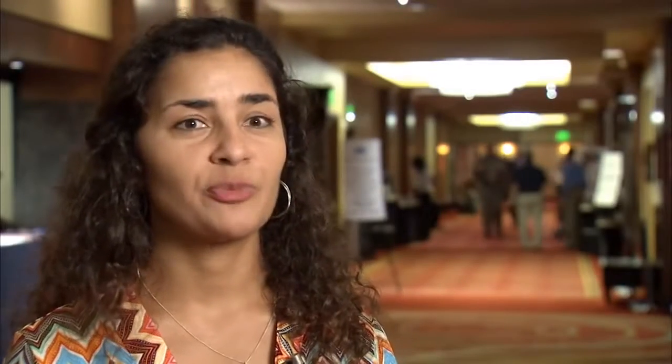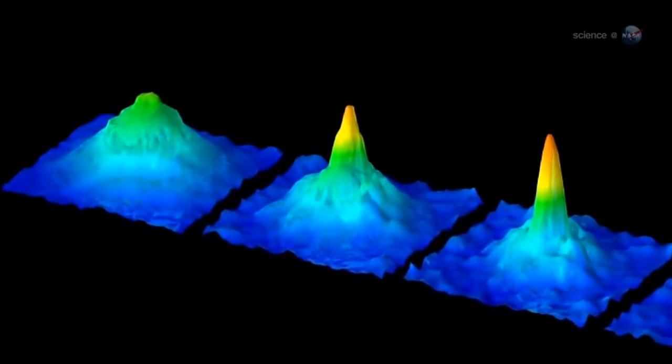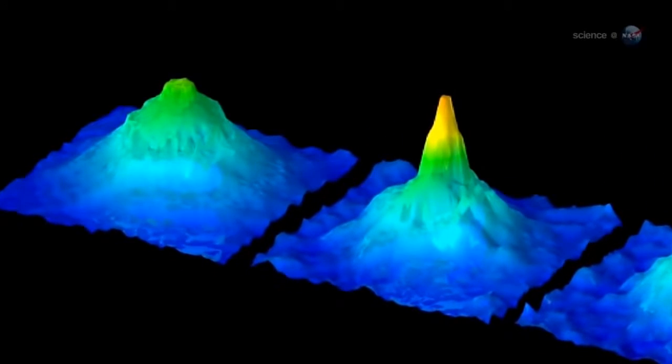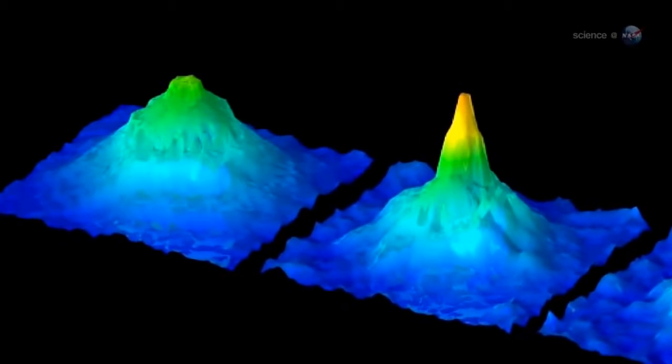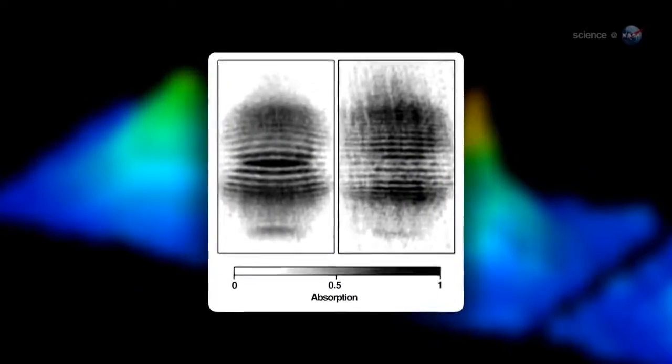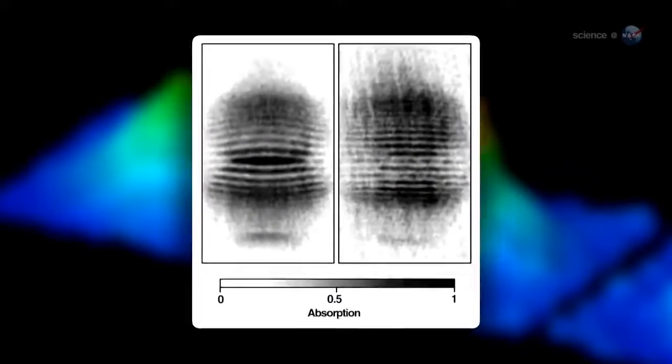At those temperatures, matter actually behaves entirely differently. At room temperature, matter behaves like particles — like billiard balls knocking into each other. But at temperatures below the Bose-Einstein condensate temperature, matter actually behaves as something called a matter wave. At the temperatures we're going to see on the International Space Station, we're going to see macroscopic matter waves, which is a new phenomenon enabled by going to ISS.